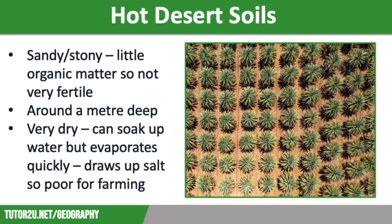However, sand dunes are not classed as soils because they lack organic matter. Hot desert soils are dry but can soak up water rapidly after rainfall, though this water will evaporate quickly. Evaporation draws salts to the surface, often leaving a white powder on the ground, which makes it extremely difficult to farm in this region.